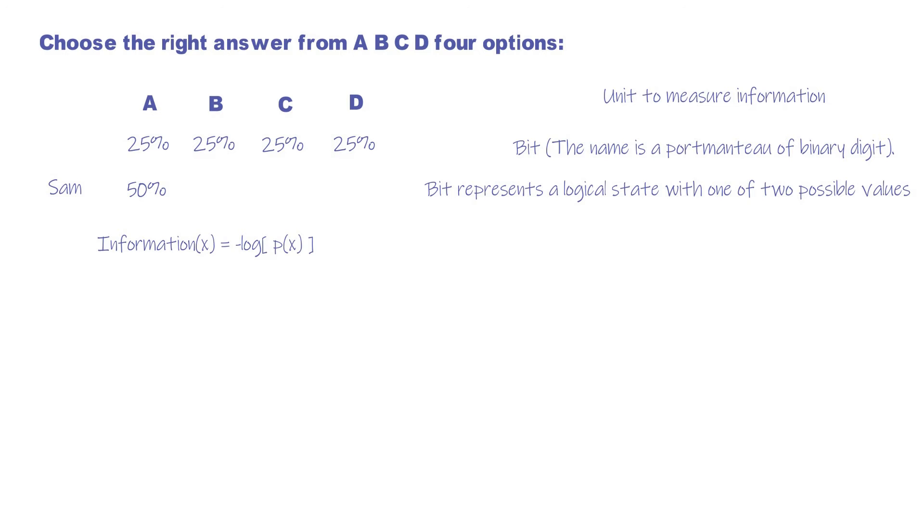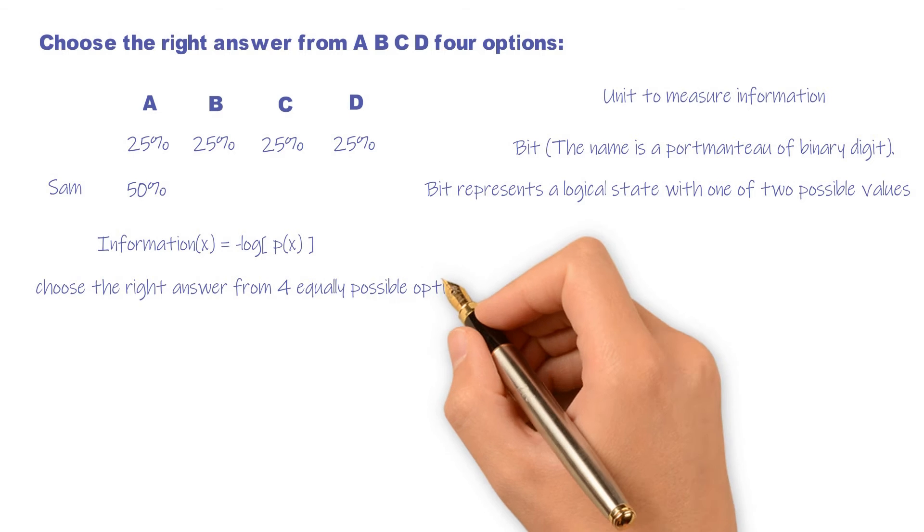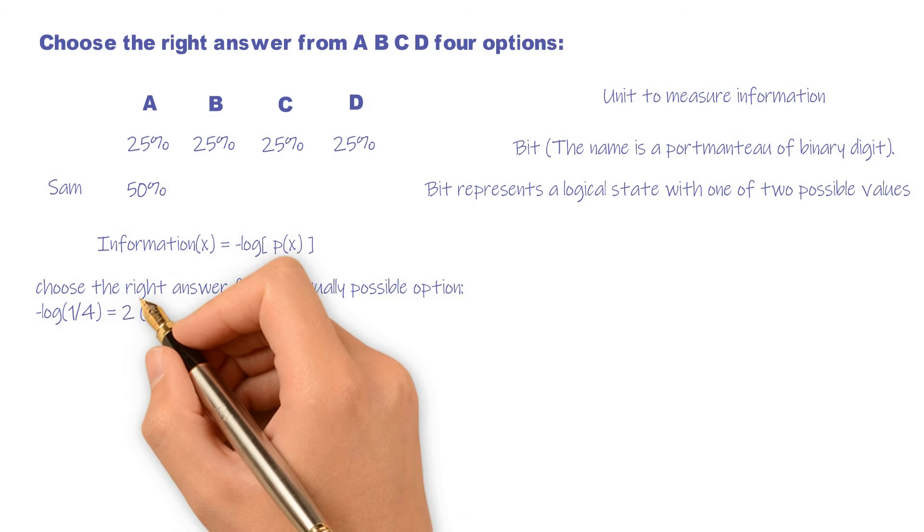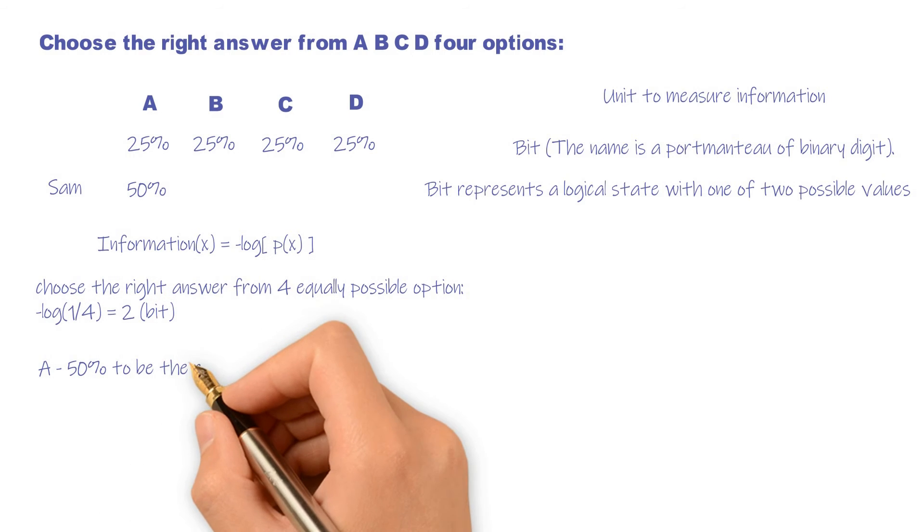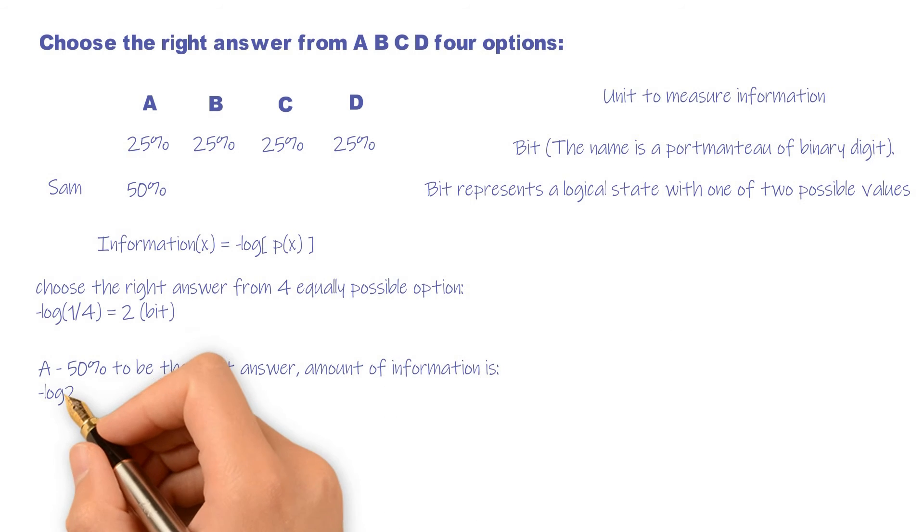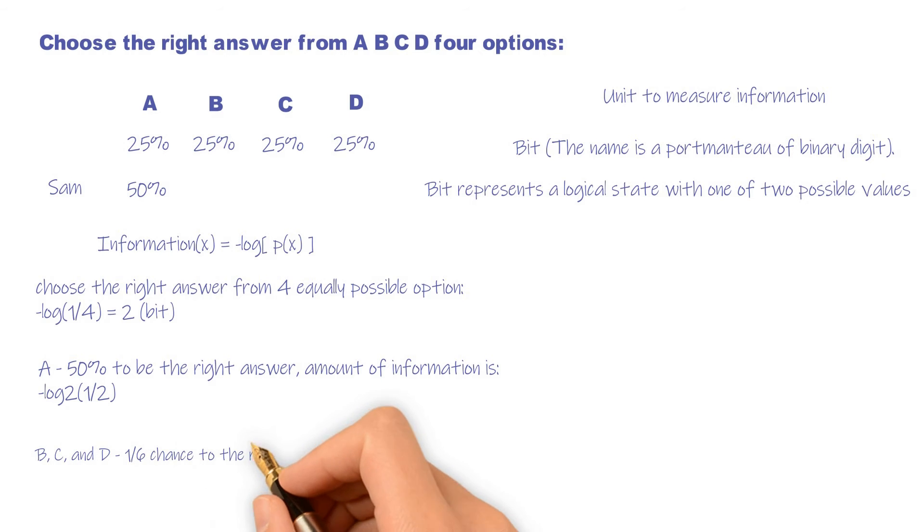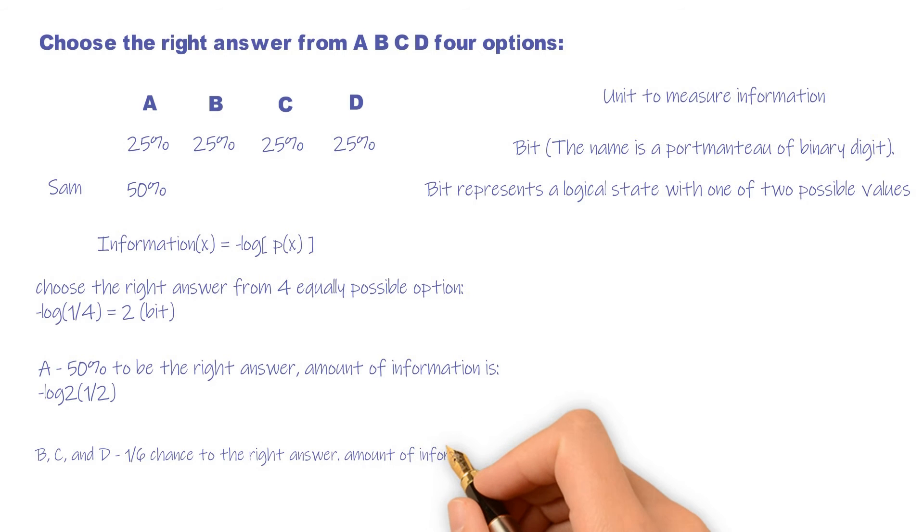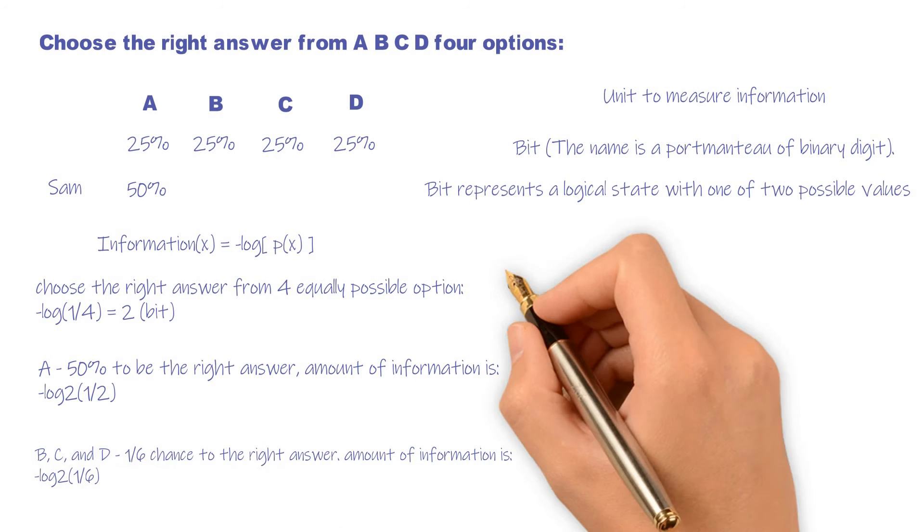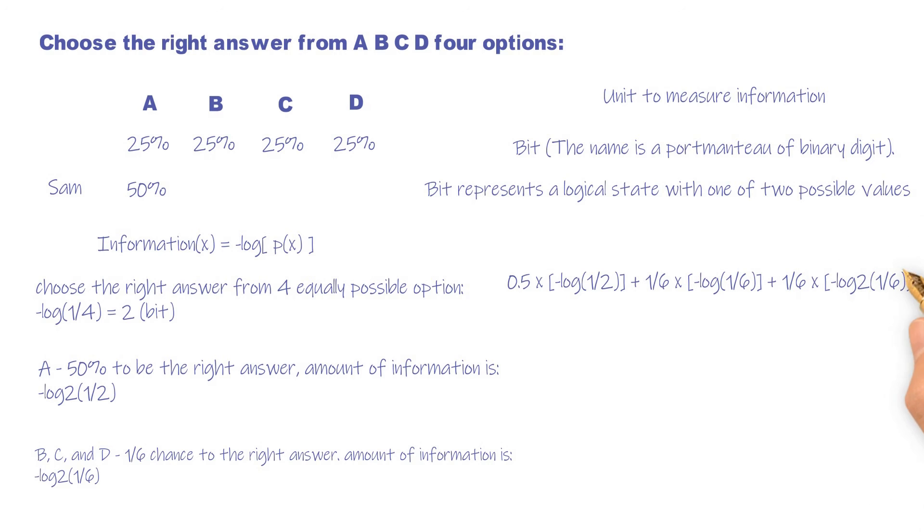With the unit and formula of information, let's re-examine the question. Choose the right answer from four equally possible options, so we need two bits of information. Sam said option A has a 50% chance to be the right answer, so amount of information is -log2(1/2) = 1 bit. B, C, and D have a 1/6 chance to be the right answer, amount of information is -log2(1/6). Now put these numbers together we get 1.79 bit, so the amount of information Sam gave us is 2 minus 1.79, which is 0.21 bit.